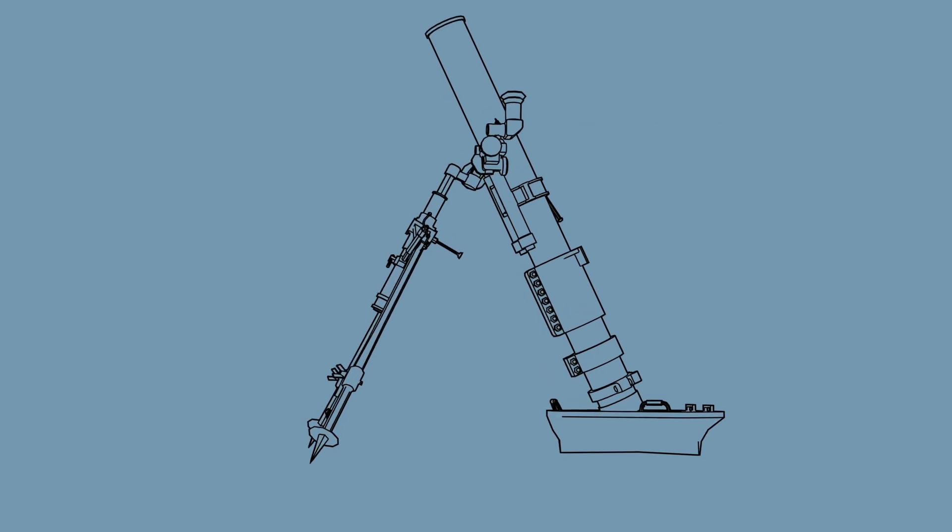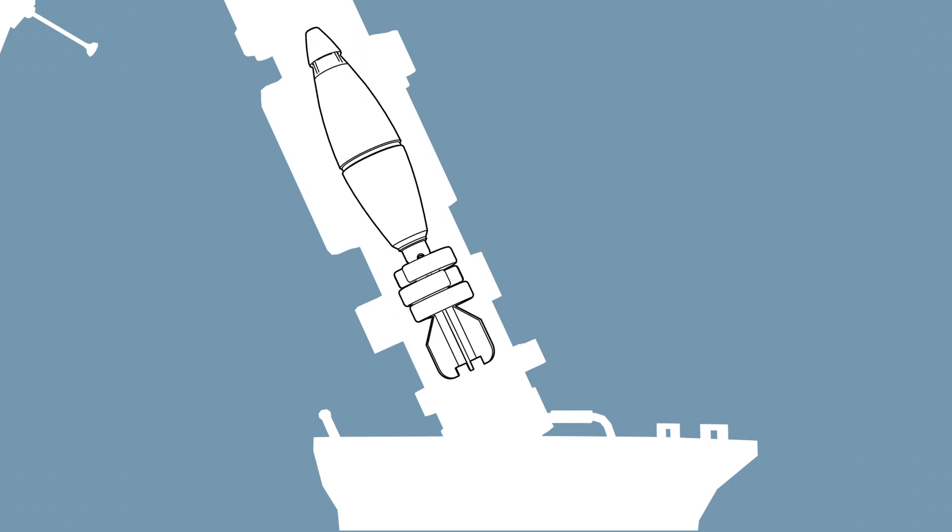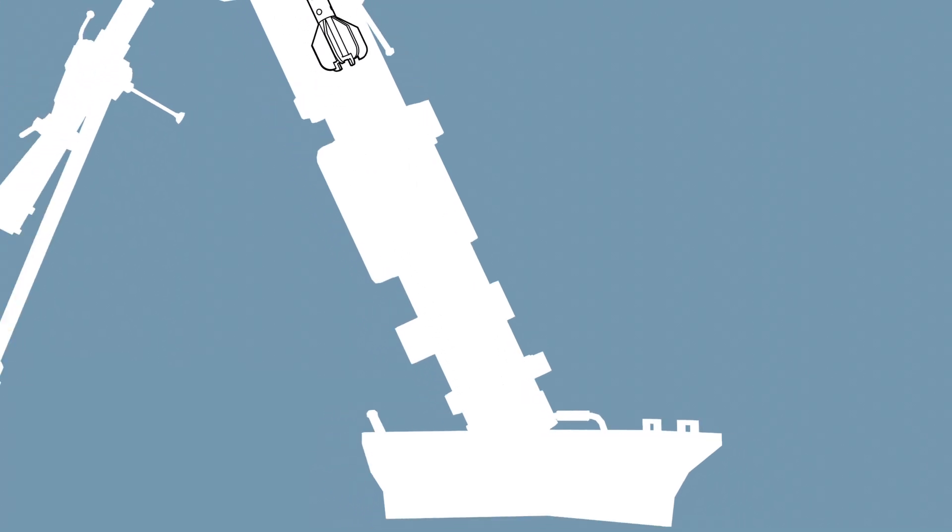The munitions are loaded into the muzzle, with a crew of at least two usually needed. When the tail end of the projectile reaches the base of the tube, the ignition cartridge strikes a fixed firing pin. This sets off the propellant charges, accelerating the projectile towards the target.